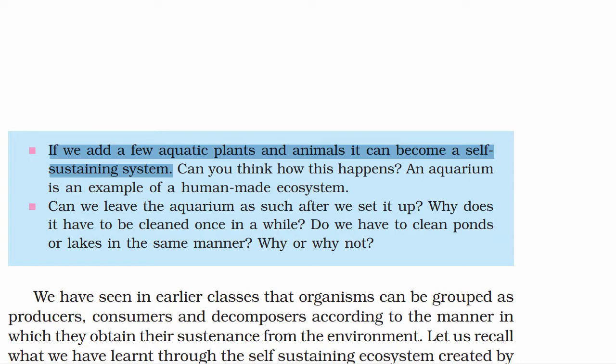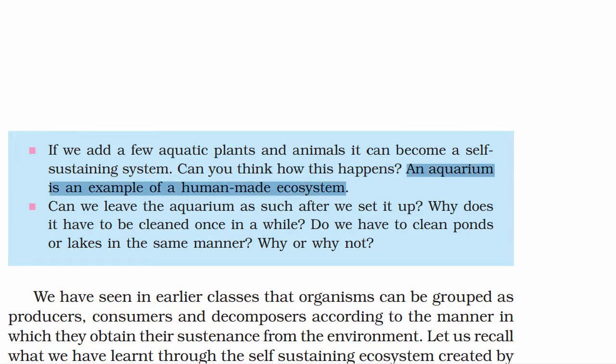A self-sustaining system means you don't have to constantly maintain it — it can sustain itself. Can you think how this happens? An aquarium is an example of a human-made, or artificial, ecosystem.